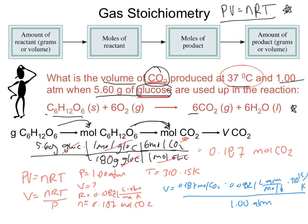Plugging all of that into the calculator gives 4.76 liters. Moles of CO2 cancel, ATM cancels, Kelvin cancels, and what's left over is liters. So basically in these problems, you first take whatever you're given, convert it into moles of the substance you're looking for, and then once you have those moles, you give your answer in pressure, volume, or temperature — whatever they're asking for.